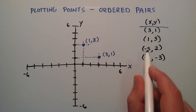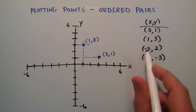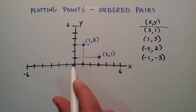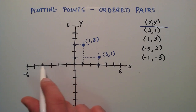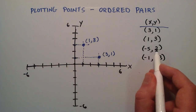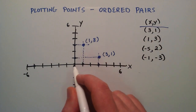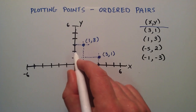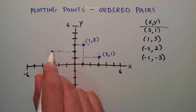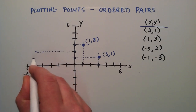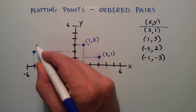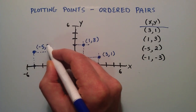For this one we have an X component of negative 5. Starting at the origin and going on the X axis in the negative direction — negative 5 puts us here for our X component. Then our Y component of this point is 2, so we start at the origin and go up 2 units in the Y direction. We draw our projections, and where these two cross is the ordered pair negative 5, 2.